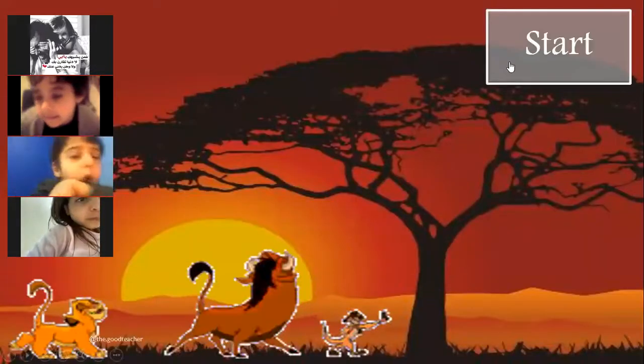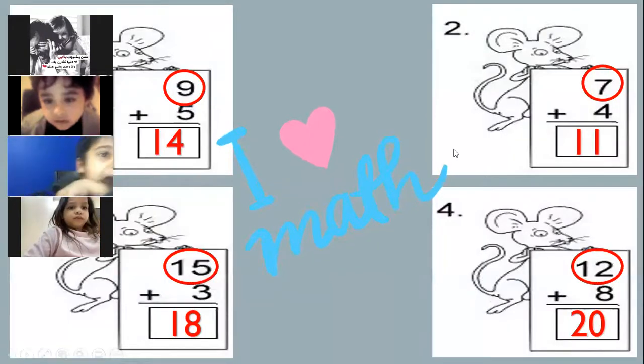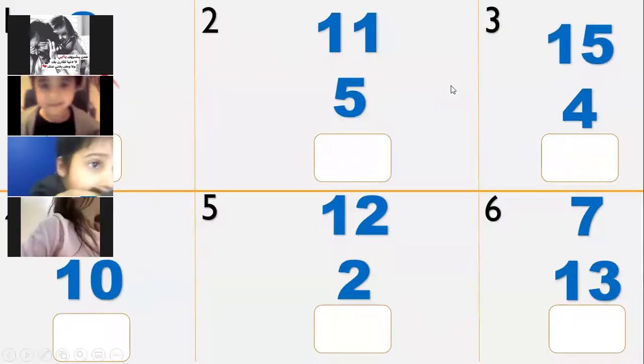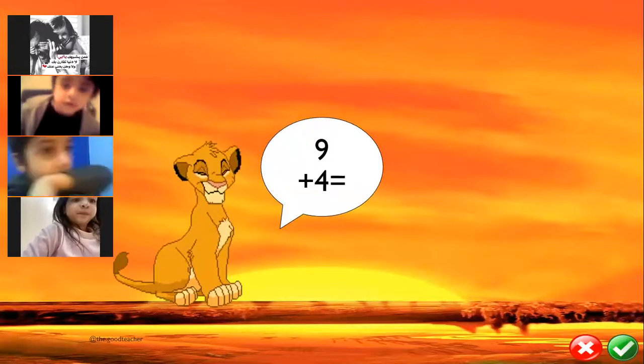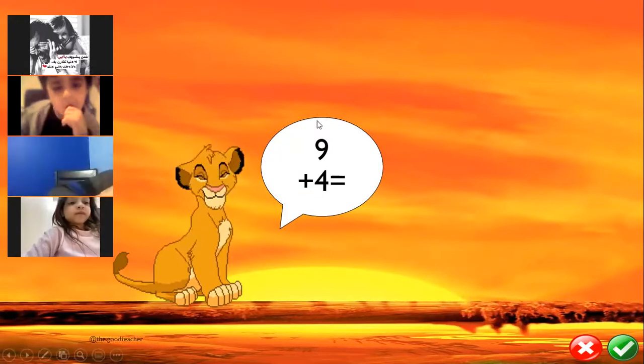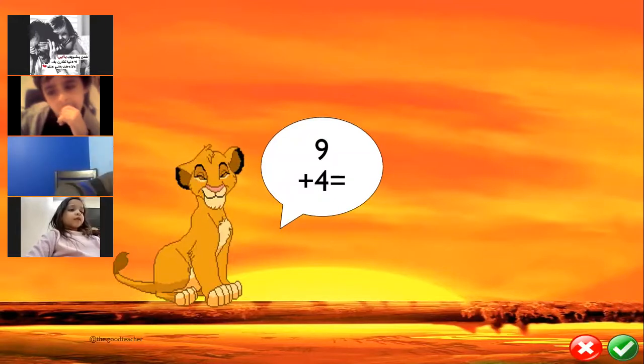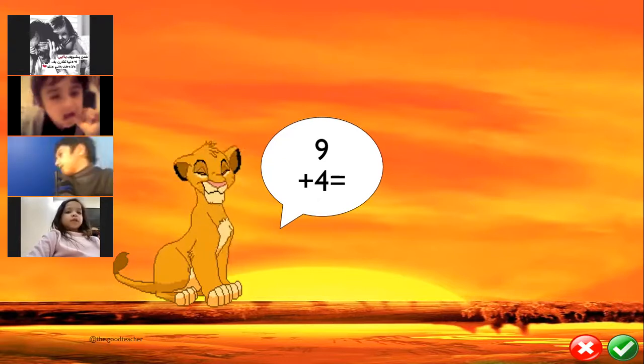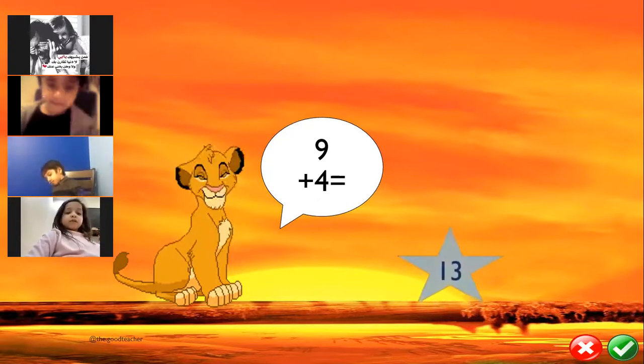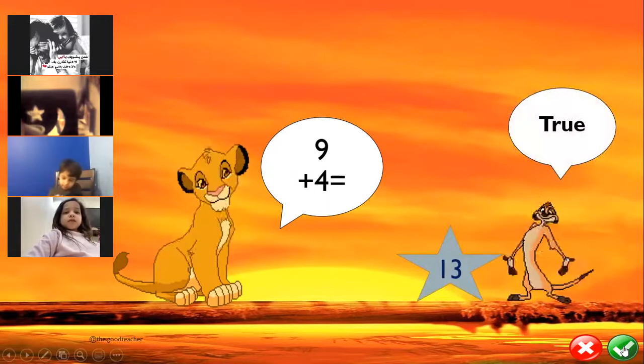Here, the first one. Yes. What happened? Nine plus four equal? Nine for my hand. What, count after nine? Nine, ten, ten, eleven, eleven, twelve, twelve, thirteen. Thirteen, yeah. Bravo, alright, true, excellent. Thank you.